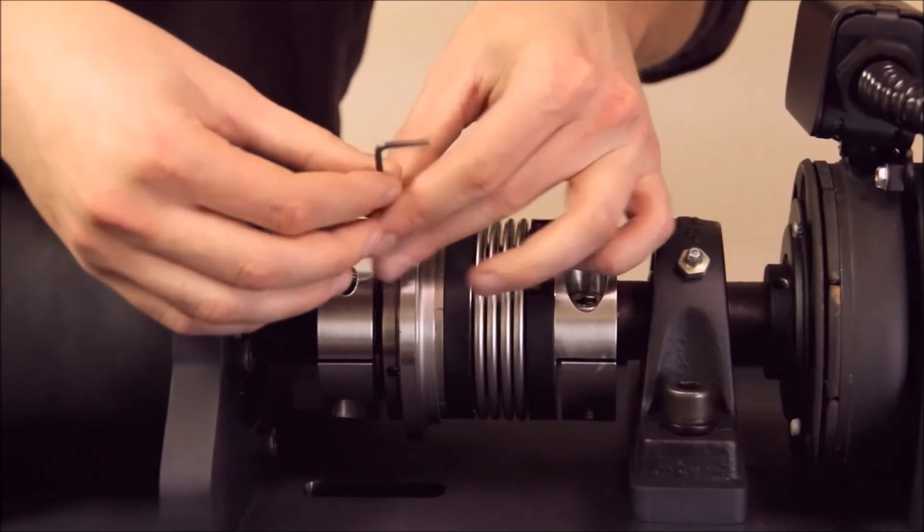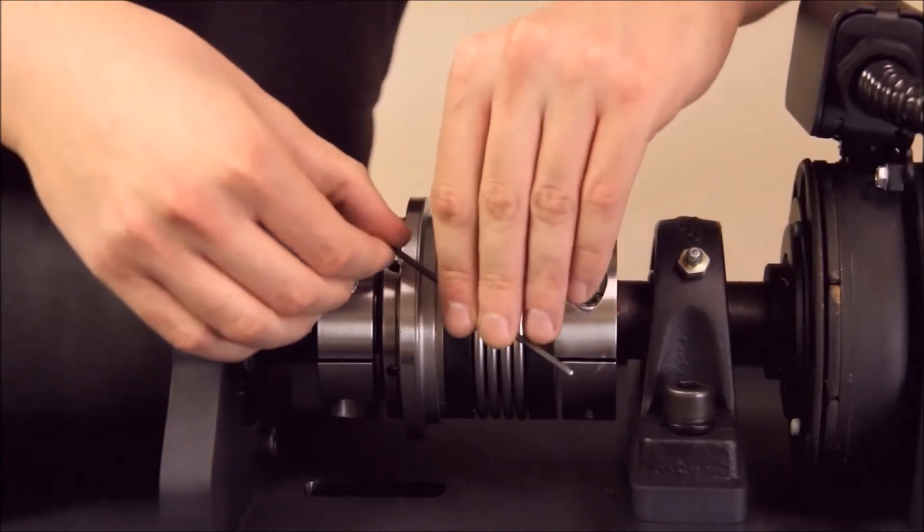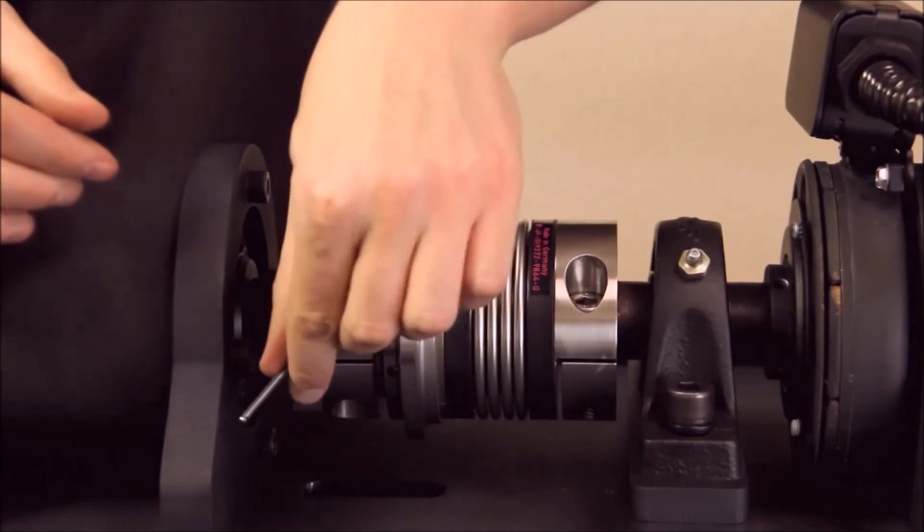Once the desired disengagement torque setting has been reached, re-secure the adjustment nut to avoid unintended movement during operation.